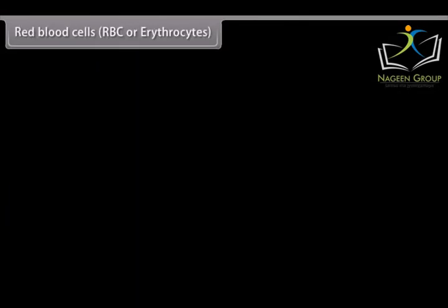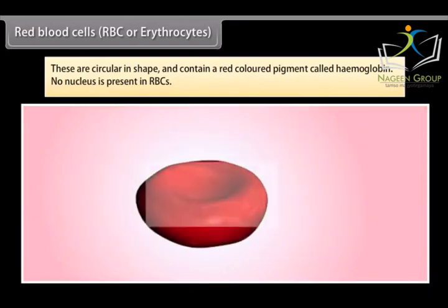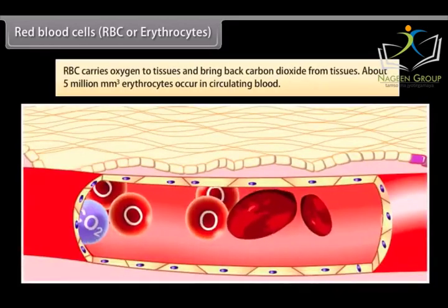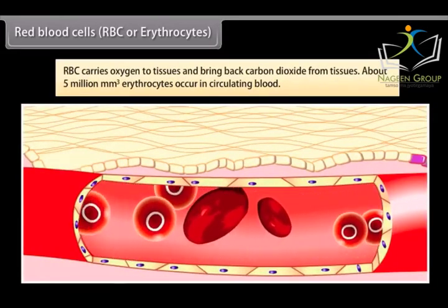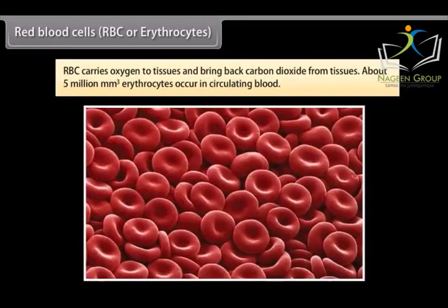Red blood cells (RBC or erythrocytes): These are circular in shape and contain a red colored pigment called hemoglobin. No nucleus is present in RBCs. RBC carries oxygen to tissues and bring back carbon dioxide from tissues. About 5 million per mm cube erythrocytes occur in circulating blood.